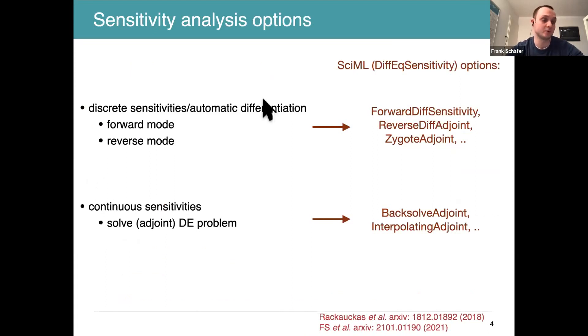For the most complicated box, as Chris mentioned in his talk, there are sensitivity analysis options within the SciML package. They can be divided into two categories: discrete sensitivities or continuous sensitivities. The discrete sensitivities can be divided into forward mode, which scales poorly with respect to the number of parameters, so it's typically not a good choice if you have a neural network as the controller. Reverse mode can have a huge memory footprint because you have to store or cache a lot of intermediate values. These discrete sensitivities are implemented as the adjoint options corresponding to the package, corresponding to ForwardDiff, ReverseDiff, Zygote, Tracker, and so on.